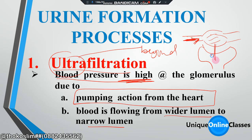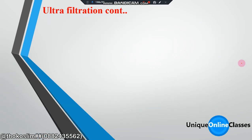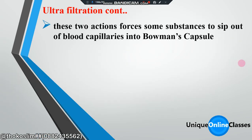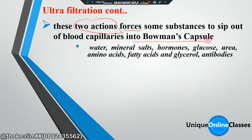We are going to use the forces of diffusion — we are going to use the bomb and the capsule, meaning the Bowman's capsule. We are going to use those two forces and those two actions, so substances diffuse into the Bowman's capsule. Examples of those substances include water, amino salts, hormones, glucose, urea, amino acids, fatty acids, glycerides, and hormones — these all diffuse into the Bowman's capsule.